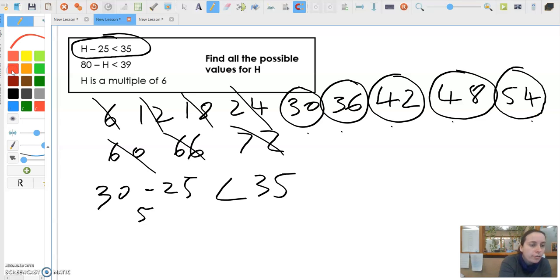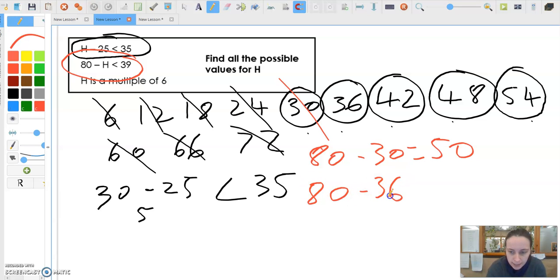So then I cross-referenced and I did the second one. 80 minus, so let's start off with this one. 80 minus 30 equals 50. Is 50 less than 39? No, it's not. So it can't be 30. I did 80 minus 36, which is 44. Is 44 less than 39? No, it's larger. So it can't be 36.